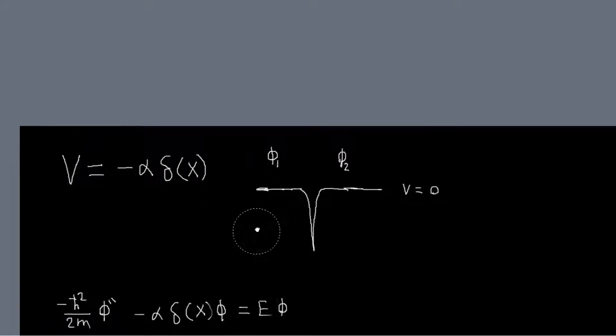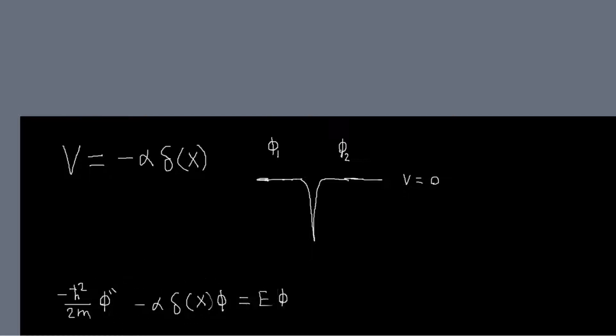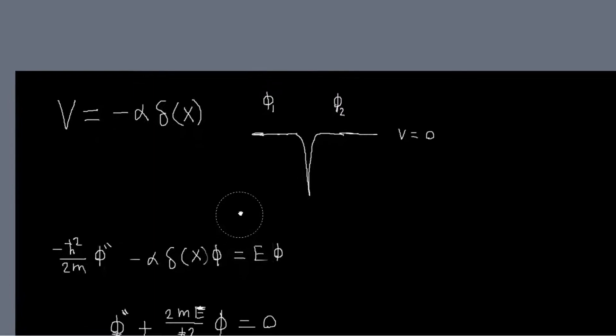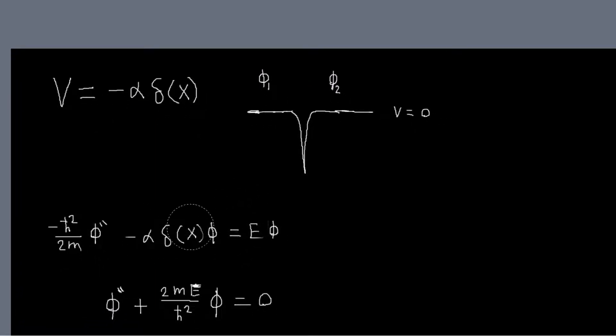So what I want to do is I write down my eigenvector equation here. And to the left of the well, the potential is just zero, and to the right of the well, it's just zero. So our eigenvector equation will just reduce to the thing that we've seen numerous times before.